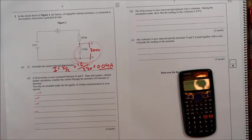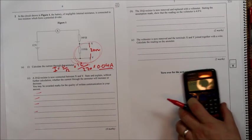The next one says, the 20 ohm resistor is now removed and replaced with a voltmeter. Stating the assumption made, show that the reading on the voltmeter is 4.9 volts.